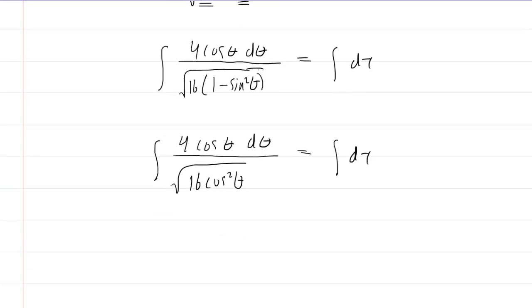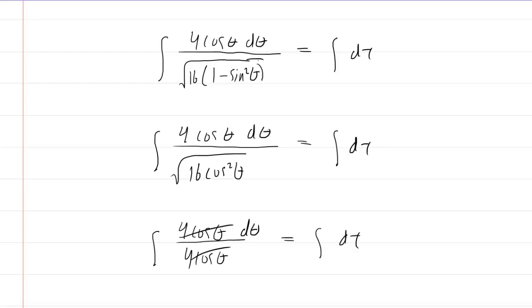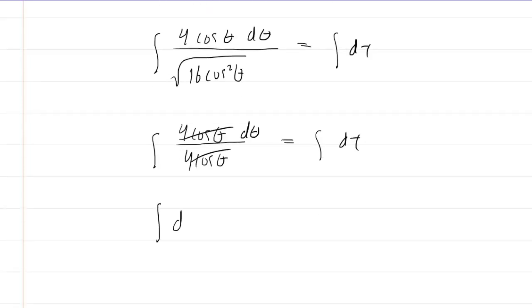We all are familiar with the identity that 1 minus sine squared is just cosine squared. So in the denominator, we'll have the square root of 16 cosine squared of theta. If we square root that, we can simplify it to just 4 cosine of theta. The numerator also has 4 cosine of theta, so those are going to cancel out.